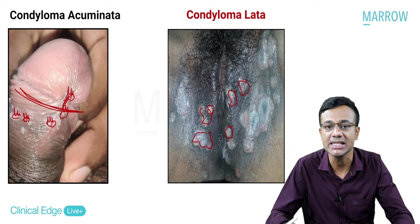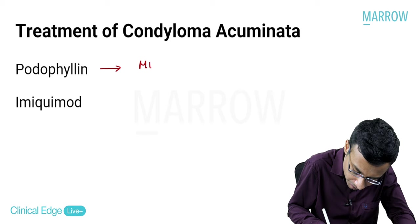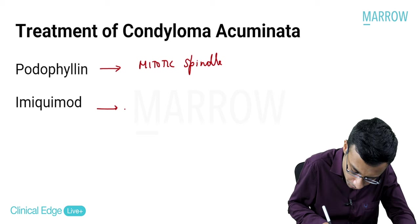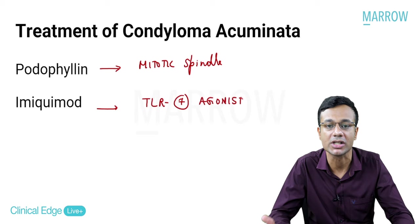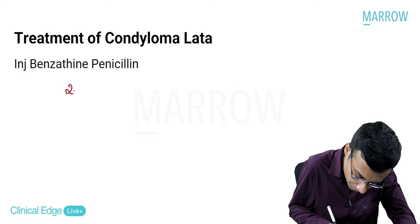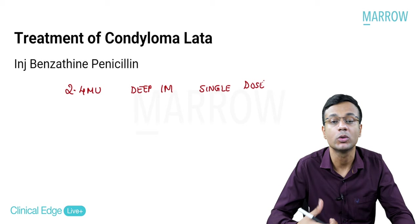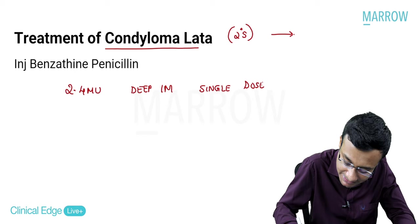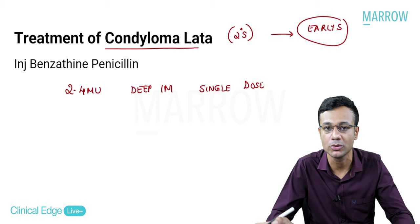For condyloma lata, give injection benzathine penicillin 2.4 million units deep IM single dose, because condyloma lata is secondary syphilis classified as early syphilis - single dose is all that is required.